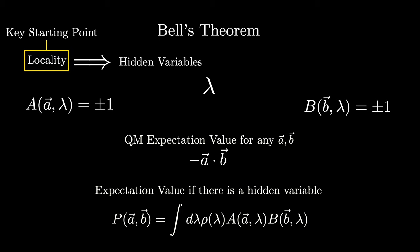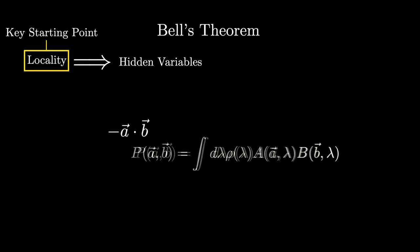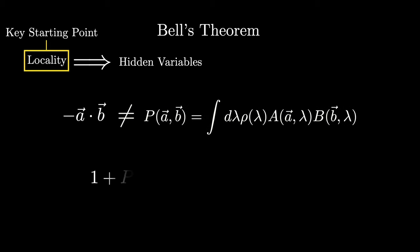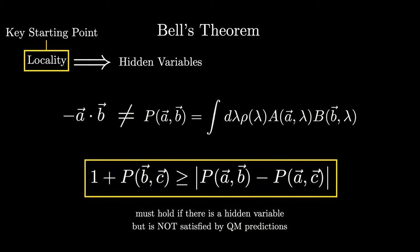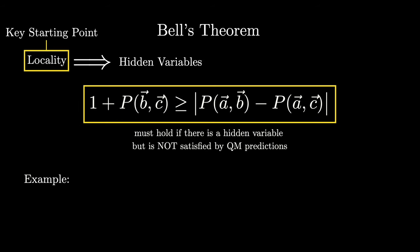Then simply, by considering a vector in another direction C and performing a few steps that just require some basic algebra, Bell shows that these two expectation values cannot equal each other and that the following inequality must hold if there is a hidden variable. And the amazing thing is that this inequality cannot be satisfied by the predictions of quantum mechanics. You can see this from a very simple example.